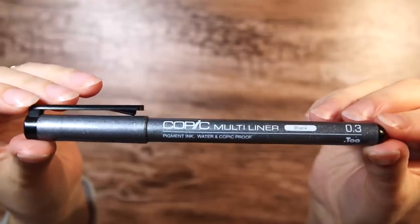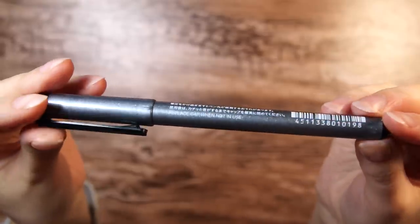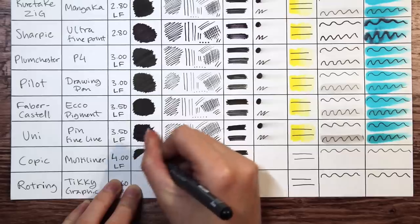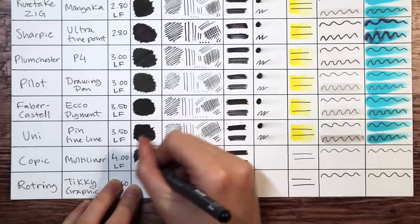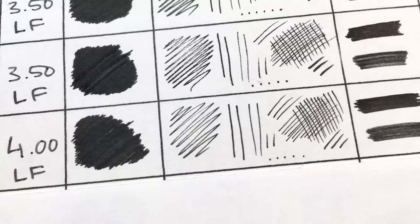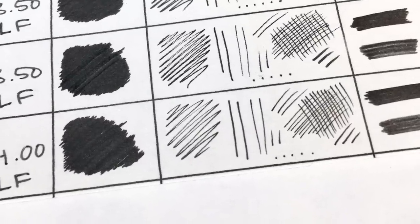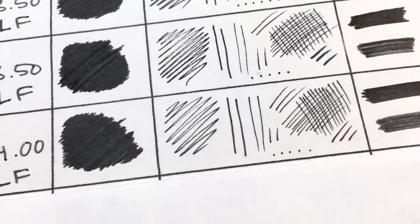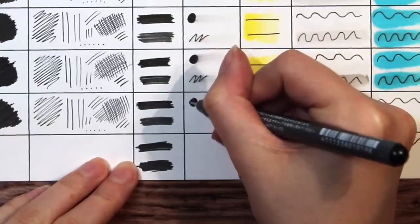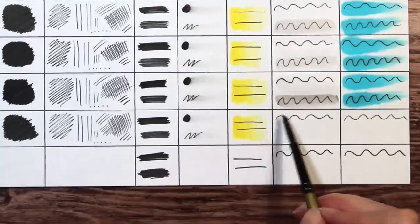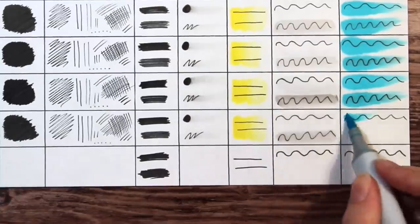Next we have another popular pen, the Copic Multiliner for about $4 and it's lightfast. I have personally never tried this one before, even if I do own Copic markers myself. It looks great in the pigment test though, even if I would say the two previous ones are slightly more pigmented I think. It doesn't smudge at all in the smudge test though and it's also holding up really well in the watercolor and marker test.